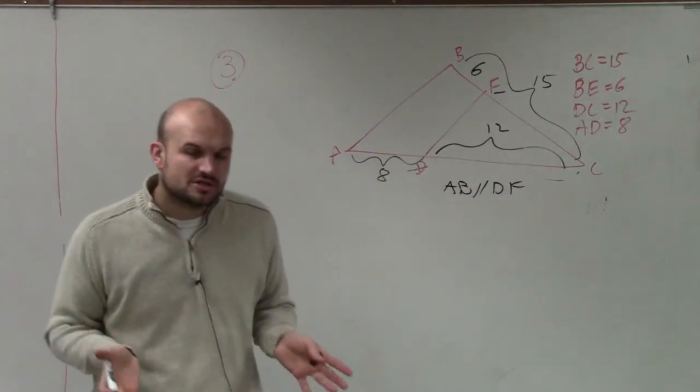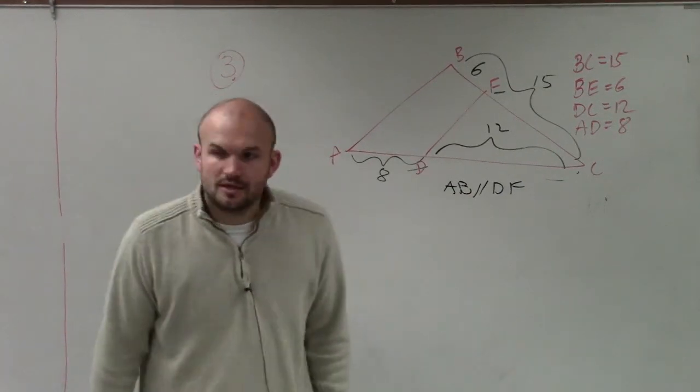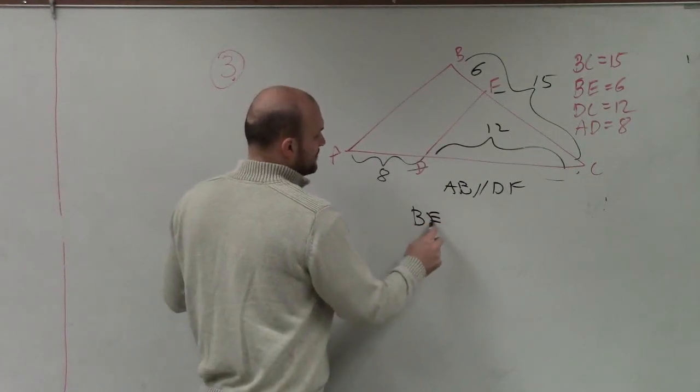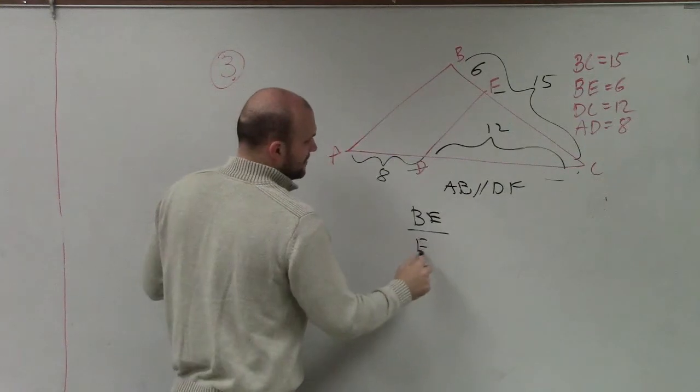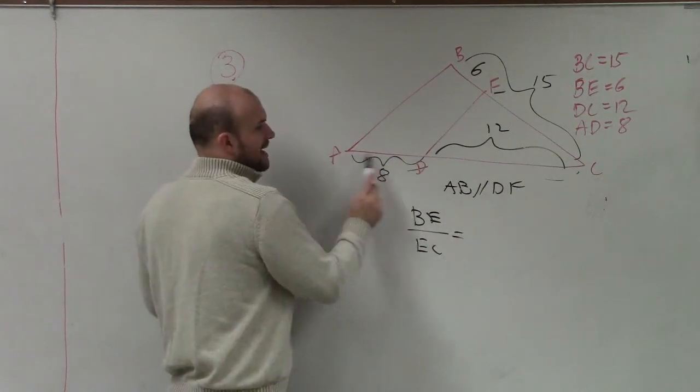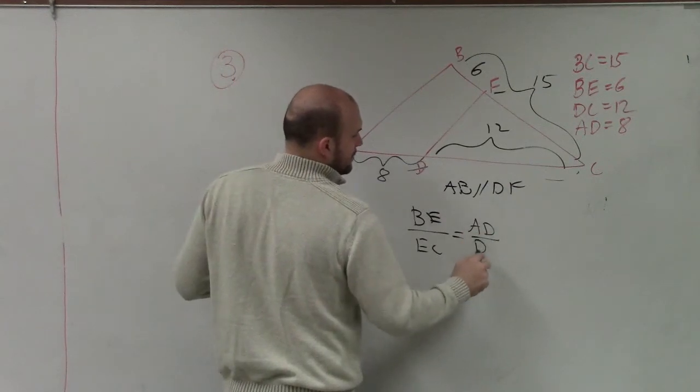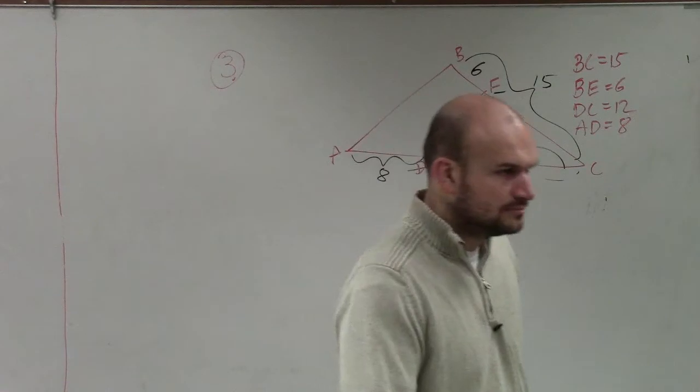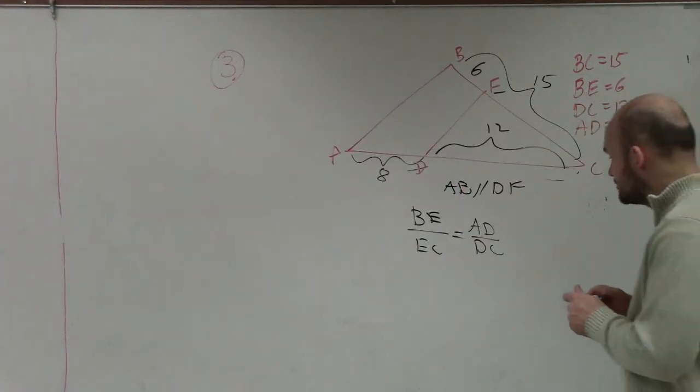So again, what proportion do we need to create to prove that these are parallel lines? Well, Donovan, the first one we have is BE is to EC is equal to AD, which is 8, over DC, which is 12. So those are the proportional lengths.